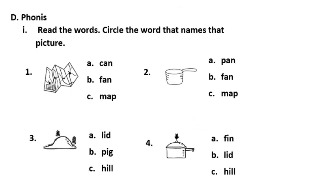D. Phonics. Read the words. Circle the words that name the picture. Here I have a map. Which word here is map? Is it A, can, B, fan, or C, map? That's the word I'm looking for. Map.